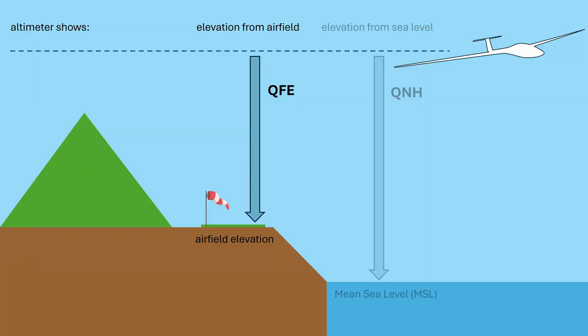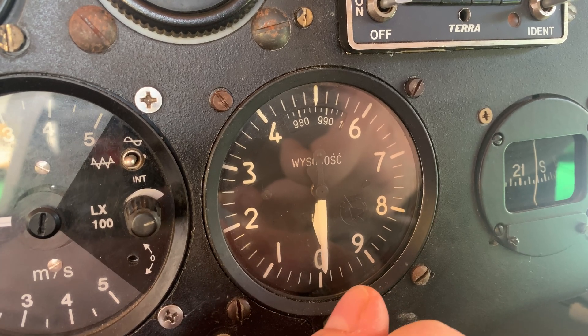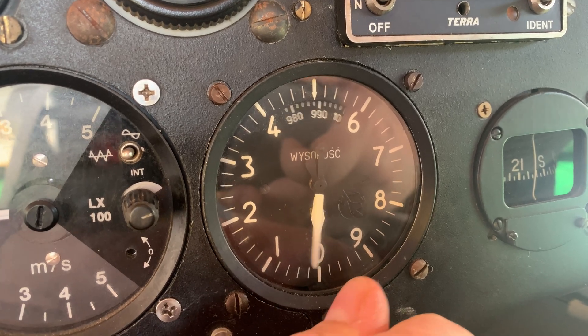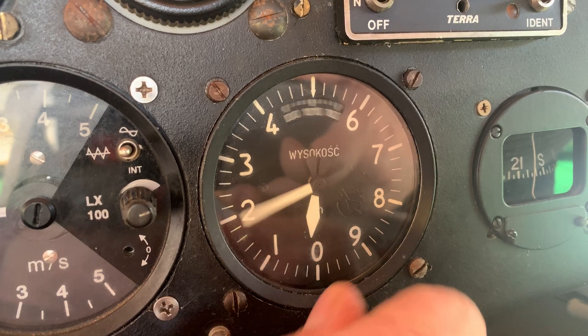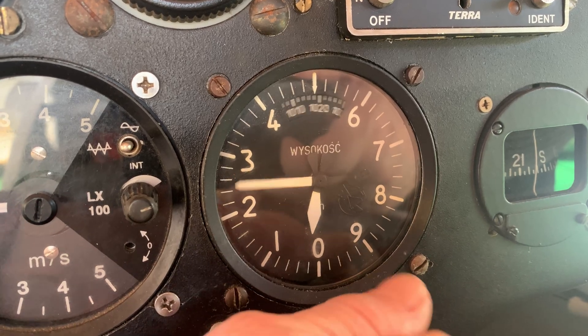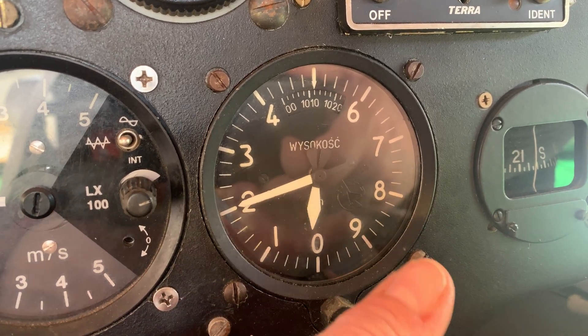But if you're flying further away, you'll set QNH — which means the absolute altitude above sea level that you're currently at, usually the elevation of the departure airfield. That way, if you land at another airport or need to interpret aviation charts during the flight, you won't have to do any tricky mental conversions.